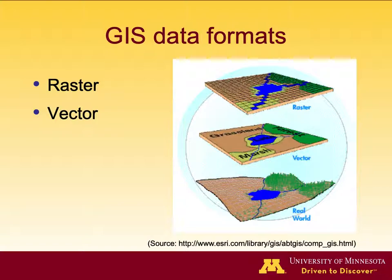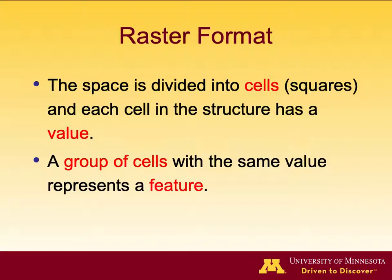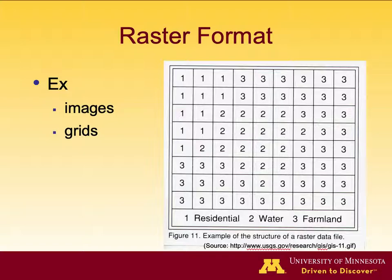In this course we introduce two GIS data formats, which are also the two main formats in GIS: raster format and vector format. In raster format, the space is divided into cells and each cell has a value. A group of cells with the same value represents a feature — think of it like a picture with pixels. For example, 1s are residential area, 2s are water body, and 3s are farmland.